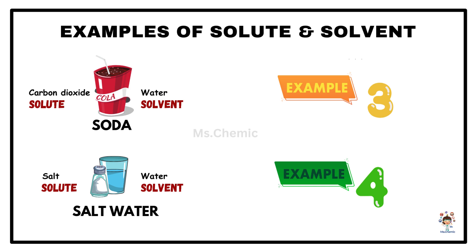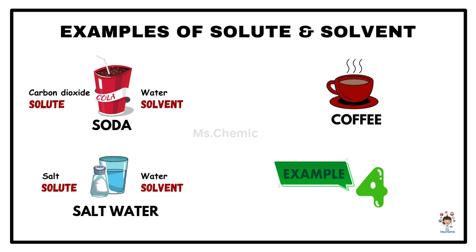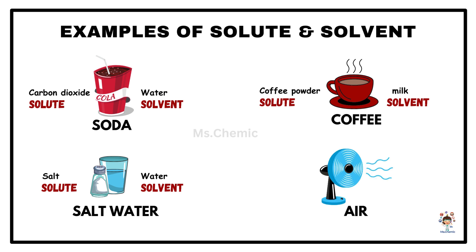Example 3, coffee. In this solution, coffee powder is the solute and milk is the solvent. Here, the solute is in the solid state and the solvent is in the liquid state. Example 4, consider air. In this solution, oxygen is dissolved in nitrogen gas. So, oxygen is the solute and nitrogen is the solvent.